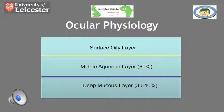The tear film itself consists of a deep mucus layer which is about 30-40%, a middle aqueous layer which is about 60%, and a surface oily layer. The aqueous component is produced by the lacrimal gland and the accessory lacrimal tissue within the fornices discussed earlier. The mucous layer allows the tears to spread and maintain the aqueous layer over the cornea for a suitable period of time.